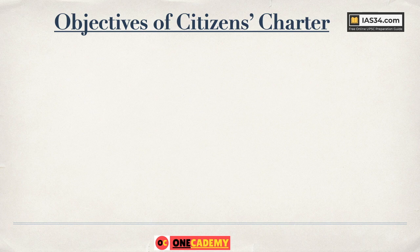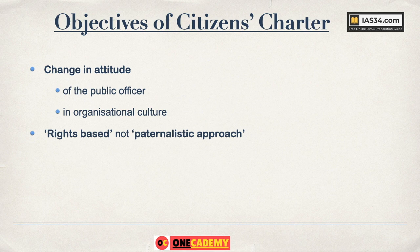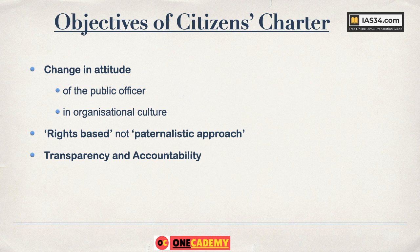So what are the objectives of Citizens Charter? Since we are studying governance, this is part of good governance measures. The first objective is to bring a change in the attitude of the public officer — the civil servant — and also in the organization's work culture. It brings a service orientation. Officers who truly understand the Citizens Charter realize that their primary job is to deliver service — they are not doing citizens a favor.